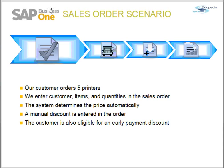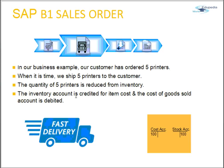Let's see the typical scenario of a sales order. Say a customer wants five printers. You enter the customer code, the item (your printer), and the quantity of five. The system will automatically determine the price based on the customer's assigned price list. If there is a discount, you enter that discount. If there is an advanced payment already in the system, the customer might also be eligible for an early payment discount, all based on payment terms and your relationship with the customer.